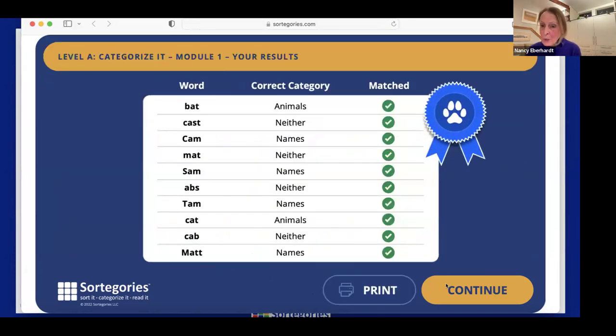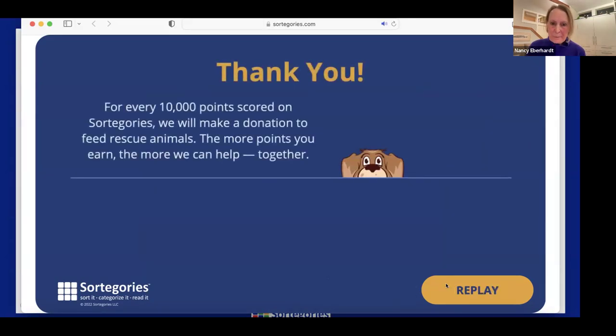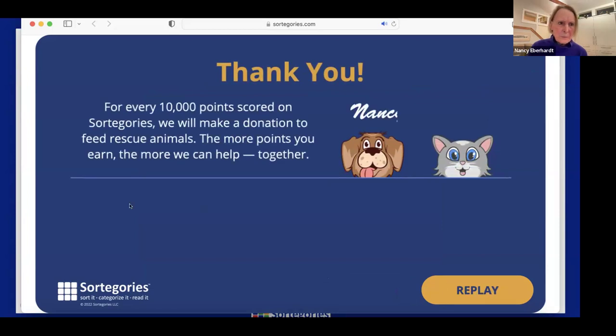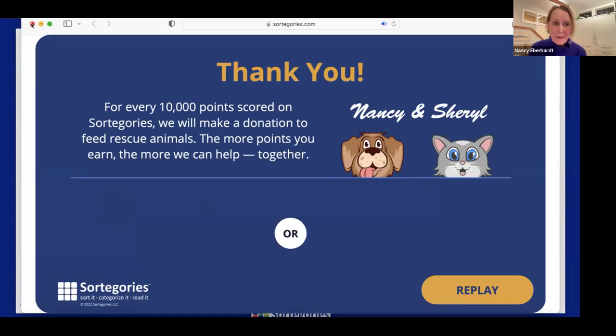Here are your results. We have a printable results screen that also, if the student prints it, the teacher would see the reward, the ribbon, and mastery level performance. Thank you. For every 10,000 points scored on Sortagories, we will make a donation to feed rescue animals. The more points you earn, the more we can help together. And that is our play. We can replay to try again.